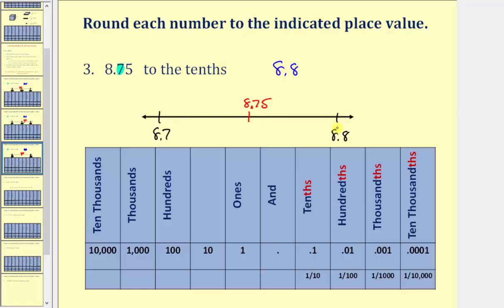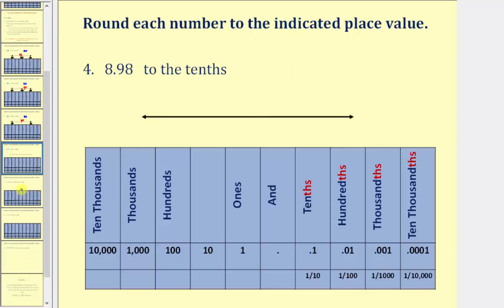So if the value is right in the middle between two numbers to a given place value, we always round up. Let's look at one more example. Here we're asked to round 8.98 to the tenths place value. We have a nine in the tenths place value, so 8.98 would be between 8.9 and 9.0. Right in the middle would be 8.95, and our given value 8.98 is closer to 9.0 than it is to 8.9. Therefore 8.98 rounds to 9.0 when rounding to the tenths place value.